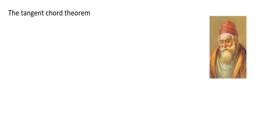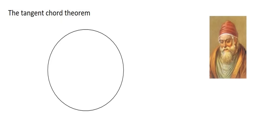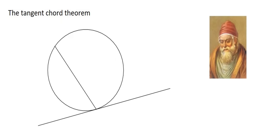As always we will start off by drawing ourselves a circle. We're then going to draw one tangent, and then draw a chord inside the circle, but one of the sides of the chord must begin or end at the point where the tangent touches the circle. The chord must not go through the center of the circle, and one of its edges must touch the point where the tangent connects to the circle — this point over here.